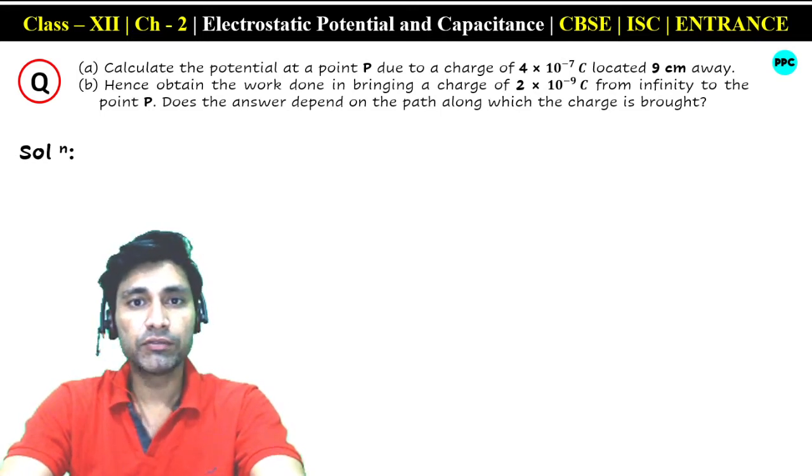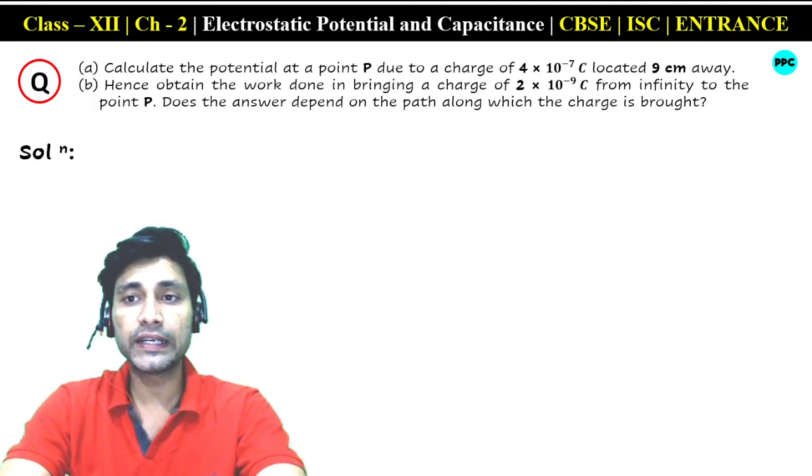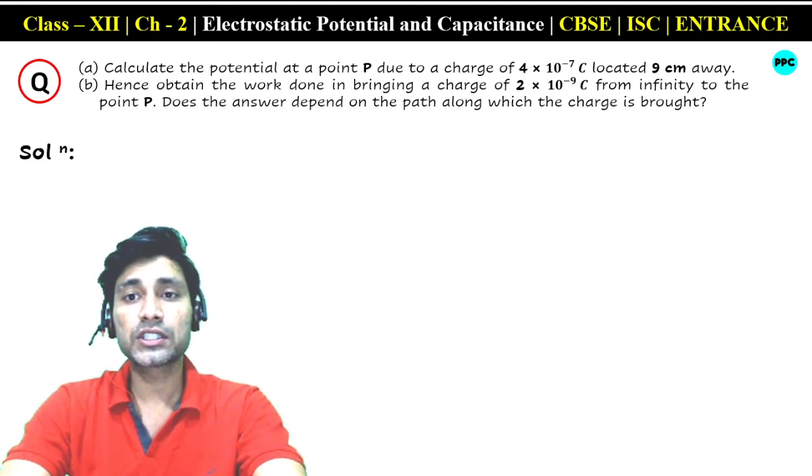The second part asks: obtain the work done in bringing a charge of 2 × 10⁻⁹ coulomb from infinity to that point P. Does the answer depend on the path along which the charge is brought?